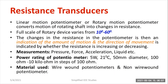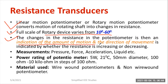A linear motion potentiometer or rotary motion potentiometer converts the motion of a rotating shaft into changes in resistance. Whenever a change in resistance occurs, the output voltage also varies. In the case of a rotary type resistive transducer, the rotary device varies from 0 to 60 degrees in steps such as 10, 20, 30, and so on. The changes in the potentiometer are an indication of the amount of motion and the direction of movement, indicated by whether the resistance is increasing or decreasing.